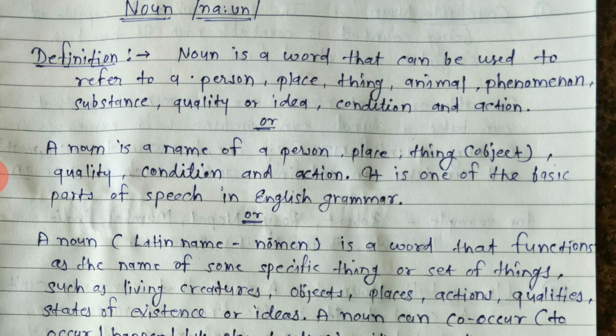A noun is a word that can be used to refer to a person, place, or thing. For persons: Tom, Jerry, Mickey. For places: Rajasthan, Delhi, India, Australia, New Zealand. For animals: cow, sheep, dog, bull. For phenomena: sunshine, snowfall, rain, weather.